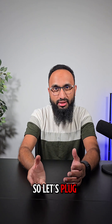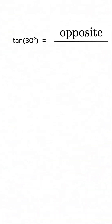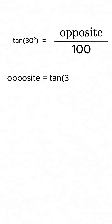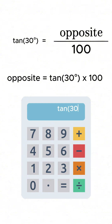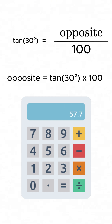So let's plug in the numbers. Tan of 30 degrees equals opposite over 100. Then we rearrange it, so the opposite becomes tan of 30 times 100. If you plug that into a calculator, tan of 30 degrees equals 0.577, and you multiply that by 100 to get 57.7 meters.